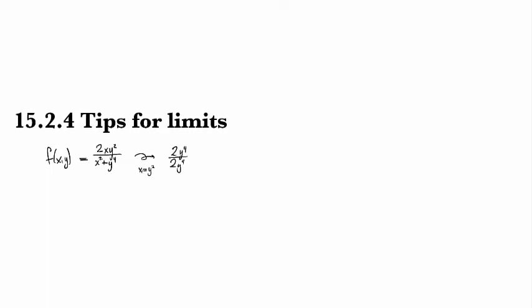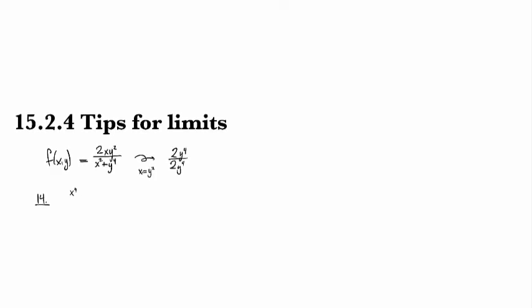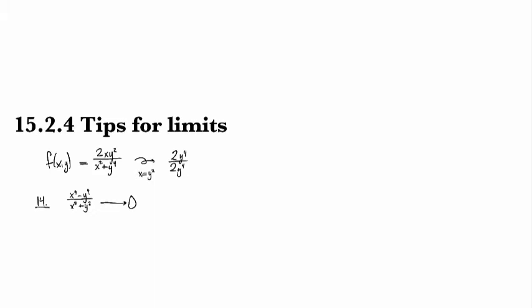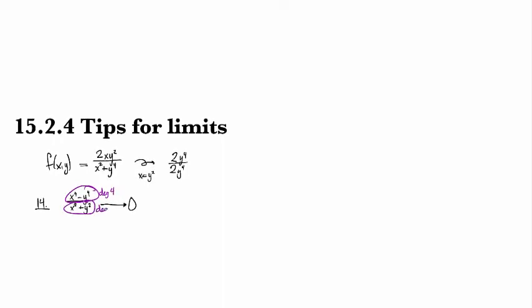Otherwise there's another thing that I can point out to you. For example, from number 14 for the homework in this section, this is looking at x⁴ minus y⁴ over x² plus y². Now, this one I know is going to go to zero at the origin, and I can tell because the top has degree four and the bottom has degree two.